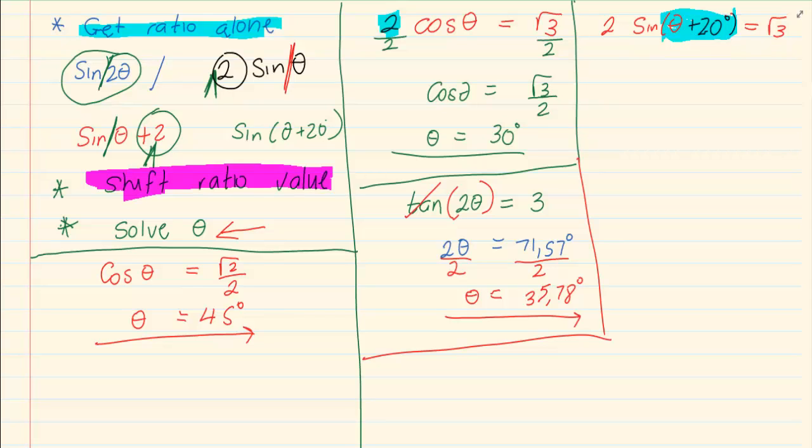But the 2 is in front of the sin. So you're going to move it by dividing by 2. So now I have sin(θ + 20) = √3/2. So my ratio now is alone except for the one that is attached to it. Now you press shift sin √3/2.